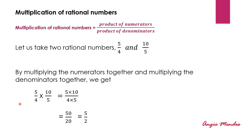Multiplication of rational numbers. By multiplying the given rational numbers, we multiply the numerators and we multiply the denominators. Very simply stated, the multiplication of rational numbers equals the product of the numerators over the product of the denominators. Let us take two rational numbers: 5 upon 4 and 10 upon 5. Multiplying the numerators together and the denominators together, we get 5 multiplied by 10 over 4 multiplied by 5, which is 50 upon 20. Reducing this further, we get 5 upon 2.